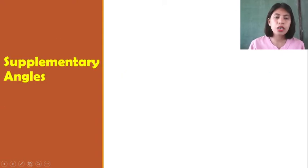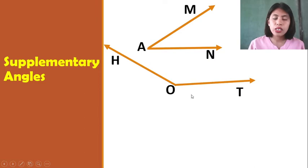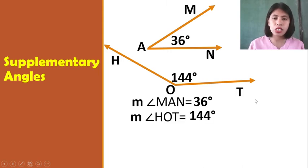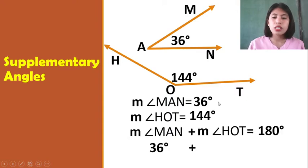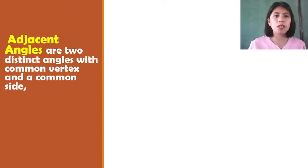Next, we have another example for supplementary angles. We have angle M-A-N equal to 36 degrees and another angle equal to 144 degrees. The sum of their angle measures must be equal to 180 degrees. So let's check: since 36 degrees plus 144 degrees is equal to 180 degrees, therefore these two angles are supplementary angles.